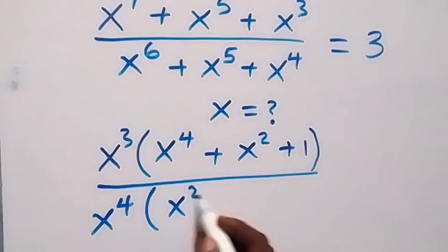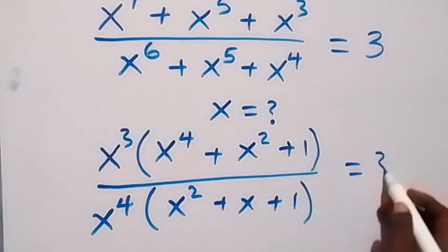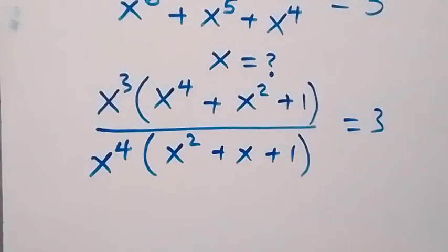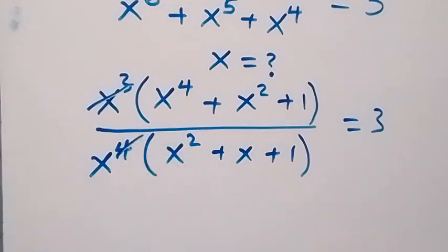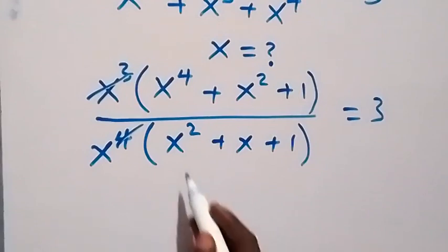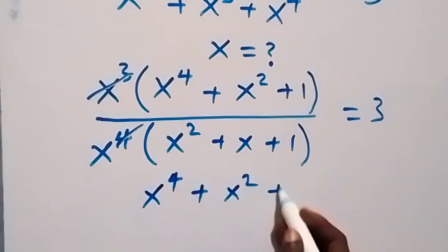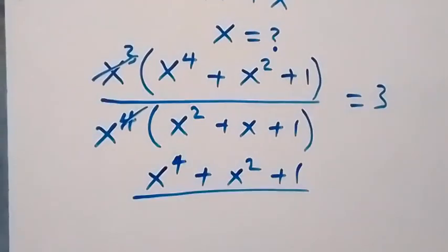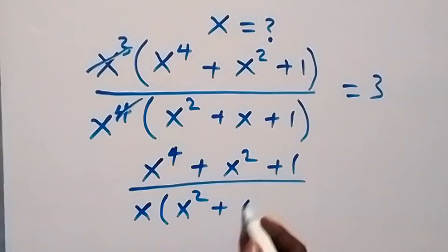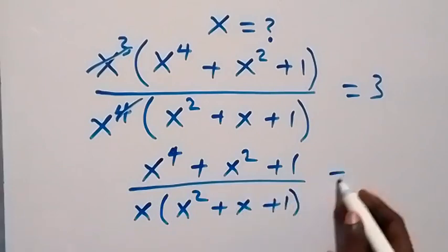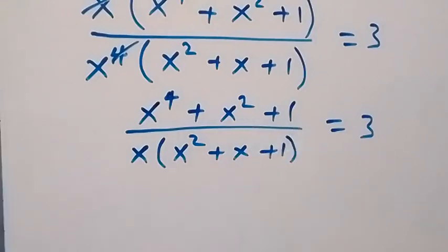In the bracket it will remain x squared, then plus x, then plus 1, which is equal to 3 on this side. So we have x raised to power 3 times bracket x raised to power 4 plus x squared plus 1, all divided by x times bracket x squared plus x plus 1, which equals 3.